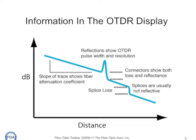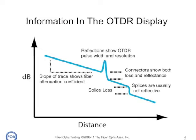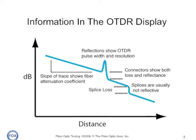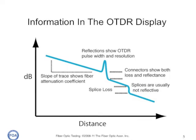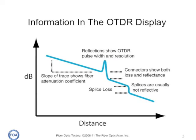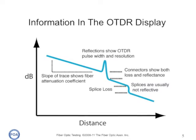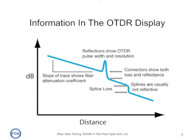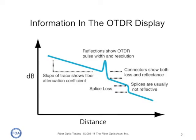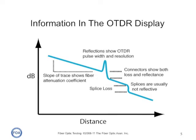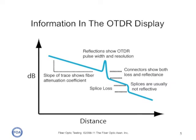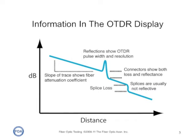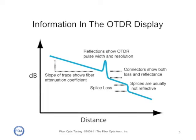This is the information in the OTDR display. The vertical scale is dB, optical power. The horizontal scale is distance, calculated from time times the average speed of light in the optical fiber. The slope of the trace shows the fiber attenuation coefficient. Connectors will show reflections and loss, and splices, particularly fusion splices, will simply show loss — they're usually not reflective.